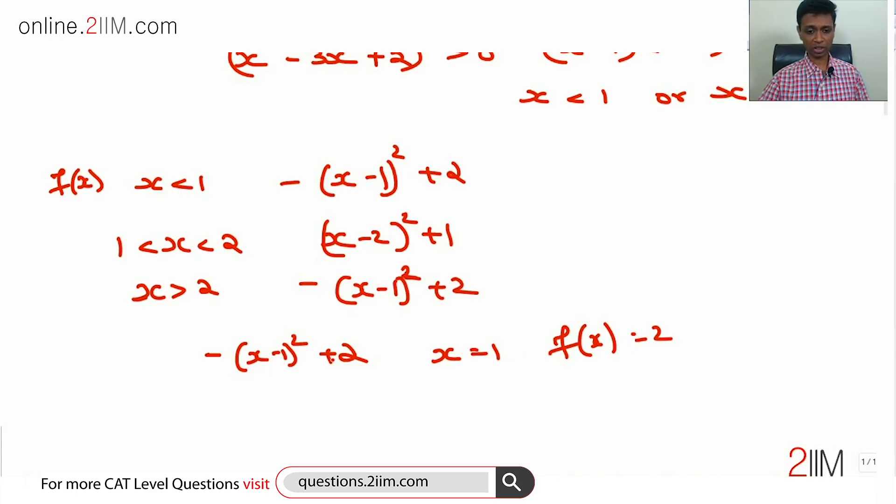So this expression cannot be more than 2, that much we know. So the maximum possible value of f(x) is 2, that is achieved when x is 1. Now, for this expression we have found out what the maximum value is. Maximum value is 2.